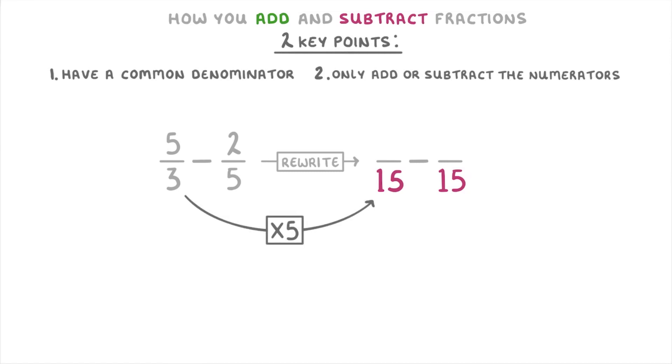And to get from 5 to 15 we've multiplied by 3, so we also multiply 2 by 3 to get 6. Then lastly, as we only subtract the numerators, we do 25 take away 6 to get 19/15. And again we can't simplify that at all, so we leave that as our final answer.